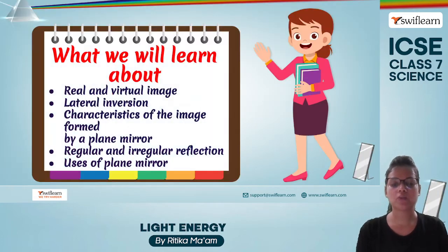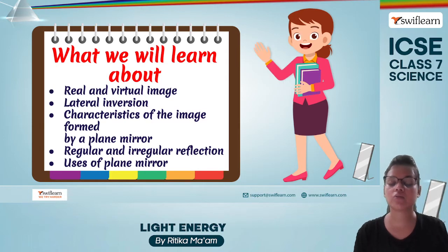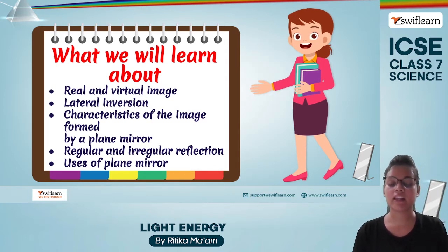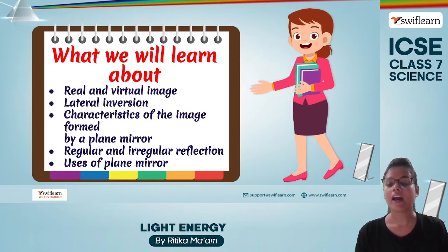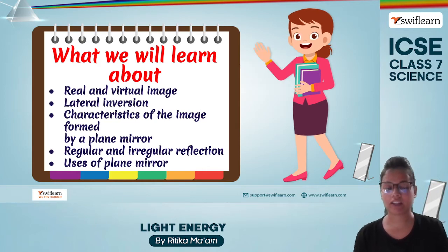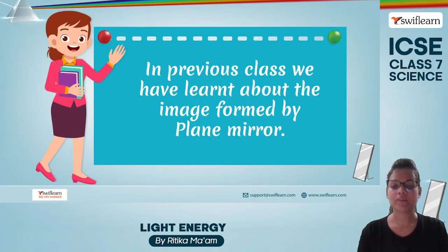So what are the things we are going to cover today? We are going to see the types of images — real and virtual — what is meant by lateral inversion, what are the characteristics of any image formed by a plane mirror, and what is meant by regular and irregular reflection. Let's get started.